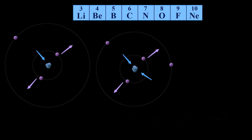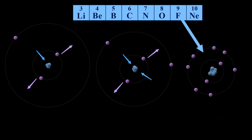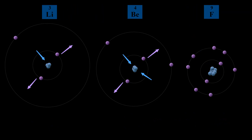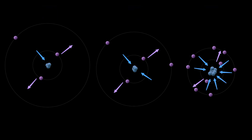Let's skip ahead in period 2 to fluorine. Fluorine has 9 protons. Again, there are 2 core electrons, so repulsions have not changed across period 2. However, with 9 protons, the 2 core electrons cancel 2 positive charges, and we have an effective nuclear charge of 7.